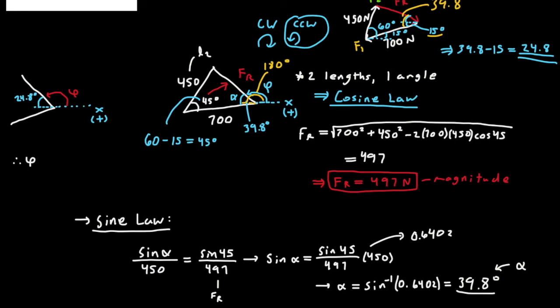And therefore, phi equals the 180 degrees along the x-axis minus that 24.8 degrees, which is equal to about 155.2.